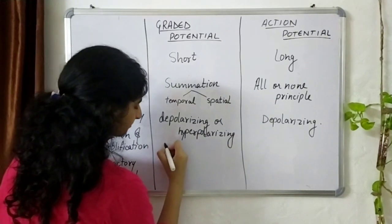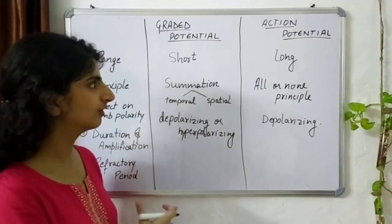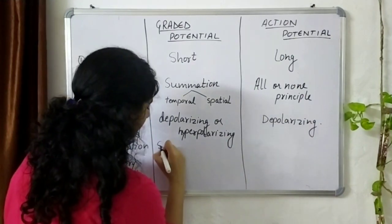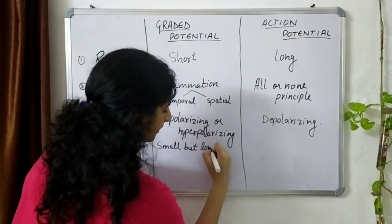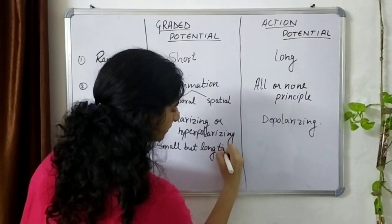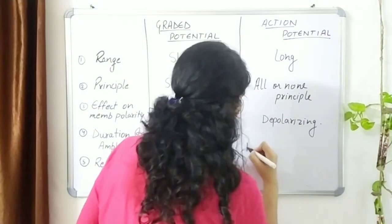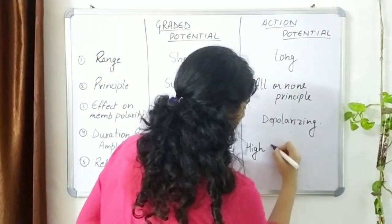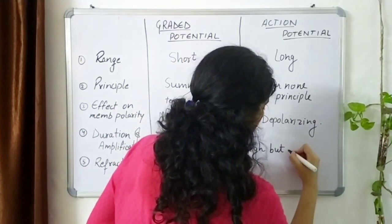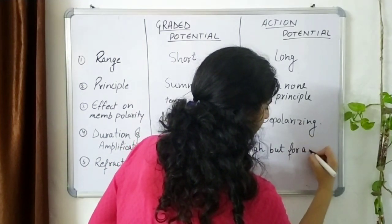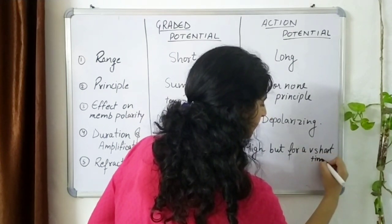Regarding duration and amplitude: a graded potential has small intensity but long duration, whereas an action potential has high intensity but occurs for a very short time.